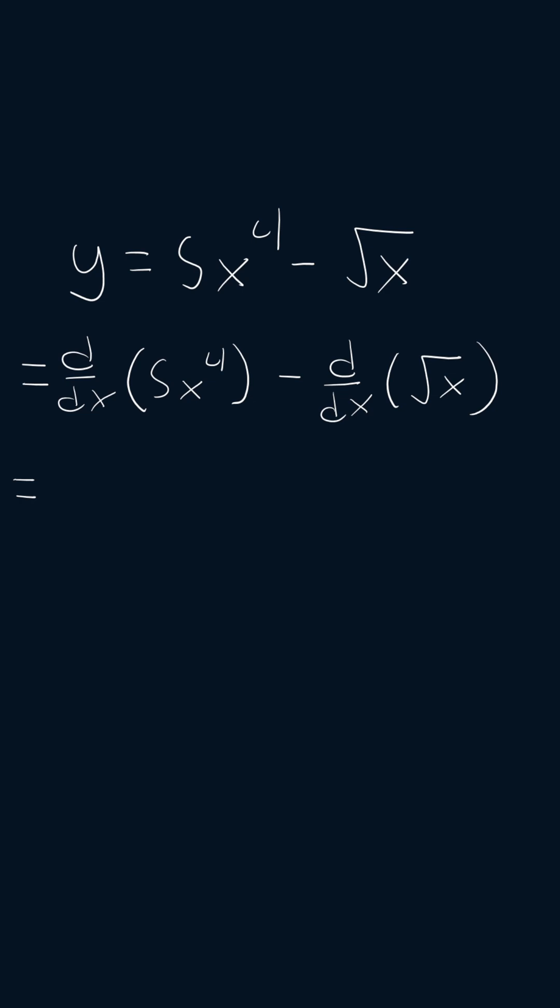Now we're going to apply the power rule to 5x to the power of 4. So we're going to get 20x to the power of 3 minus the derivative, and we're going to change the square root of x to x to the 1 half.